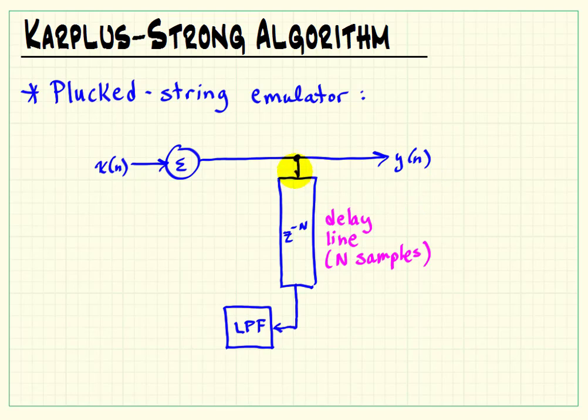The output of the delay line passes through a low-pass filter, which in turn is fed back around to the input of the delay line again.